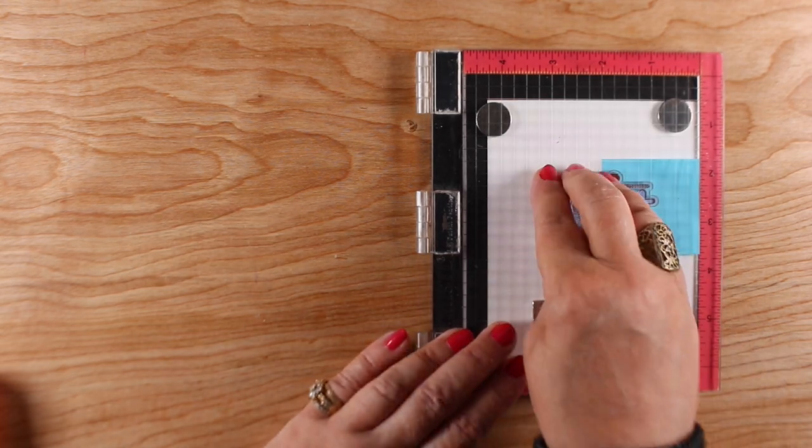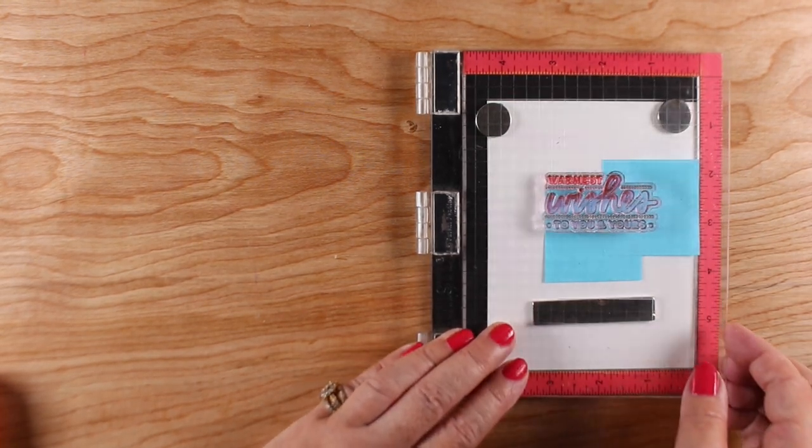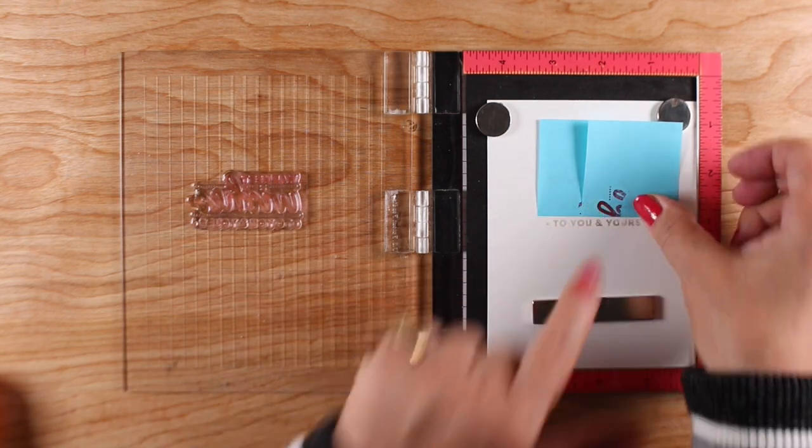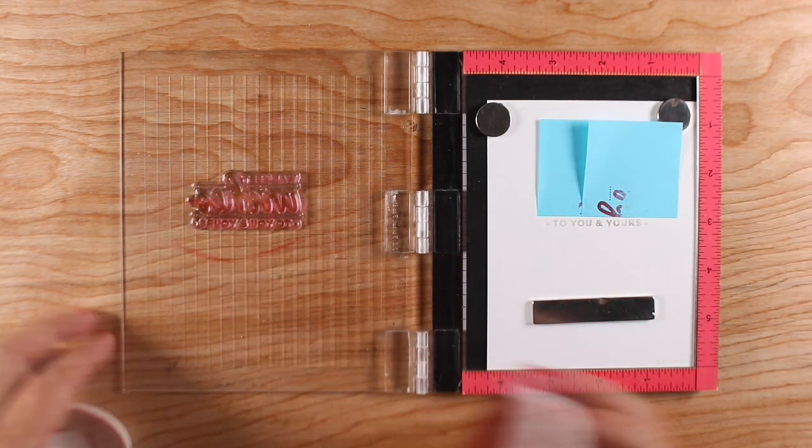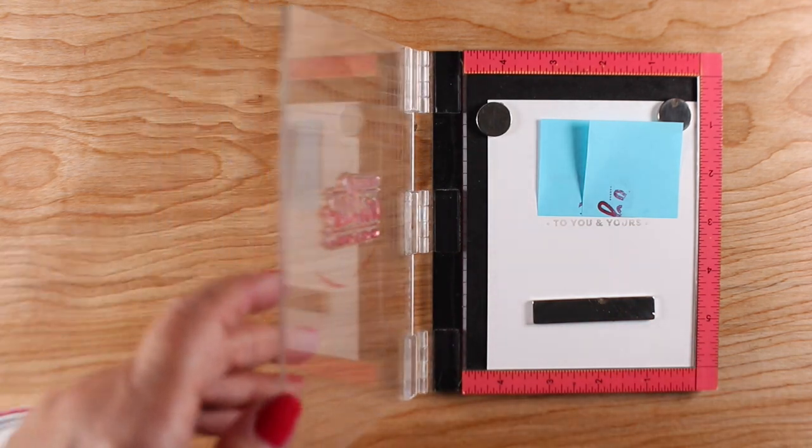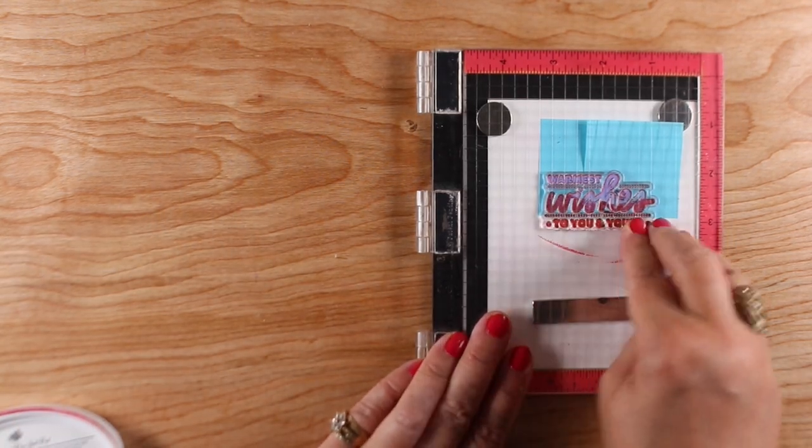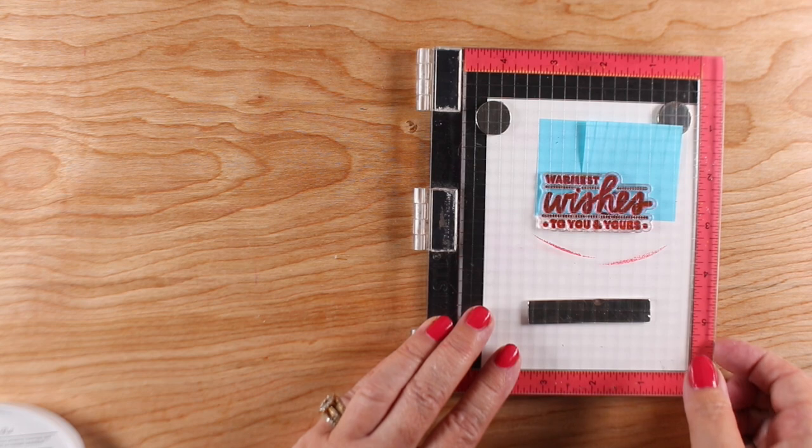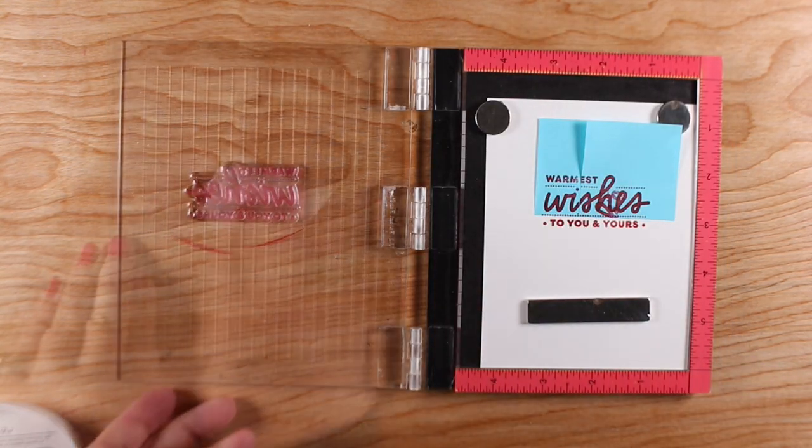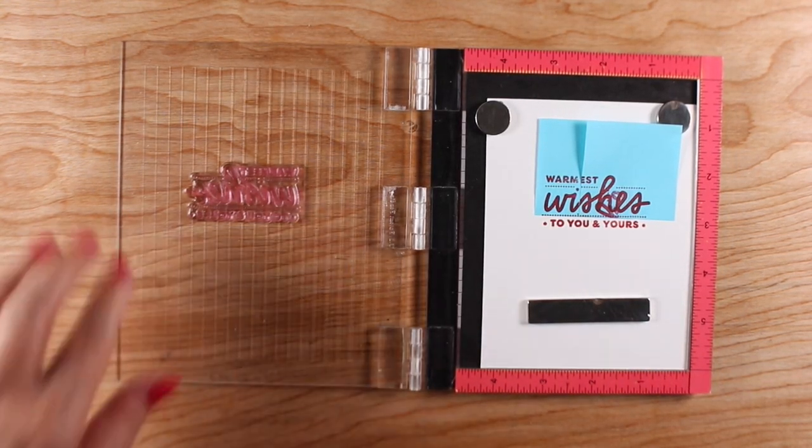I'm going to block off the areas that I don't want to show and I'm using my Catherine Pooler inks for this. I'm going to do both of my reds at the same time, so I'm choosing strategically where I want my red in my multicolor sentiment and stamping both of those parts, clean it off, and then go to whatever the next word is that you're going to use.